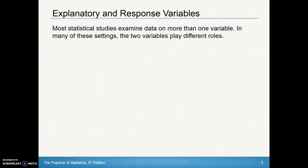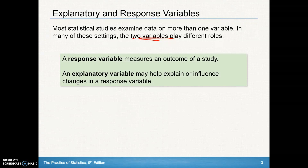Most statistical studies examine data on more than one variable, and in many settings two variables play a very important role. A response variable measures an outcome of a study — that's our y value in paired data with coordinates (x, y). The explanatory variable may help explain or influence changes in the response variable.